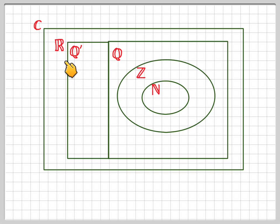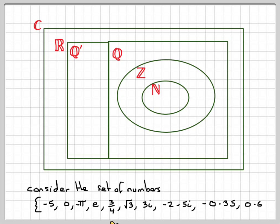Because a complex number has a real part and an imaginary part. So consider the set of numbers: minus 5, 0, minus pi, e, 3 over 4, root 3, 3i, minus 2 minus 5i, minus 0.35, 0.6 recurring, and 4, and see if you can place them in this diagram. Pause the video now to see if you can do that.